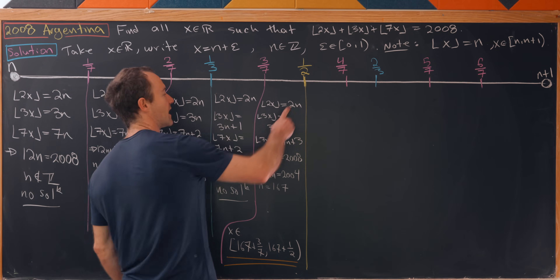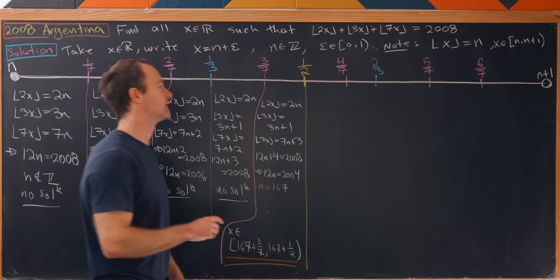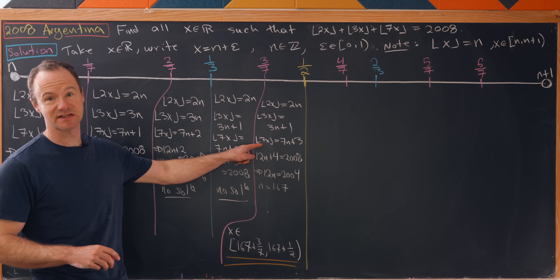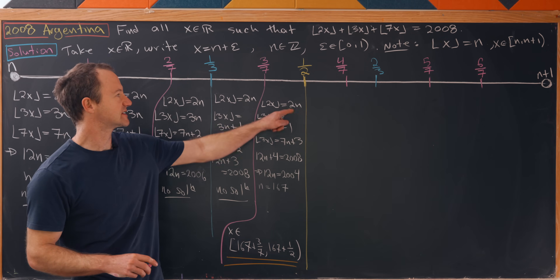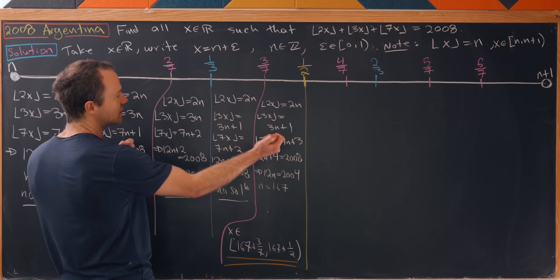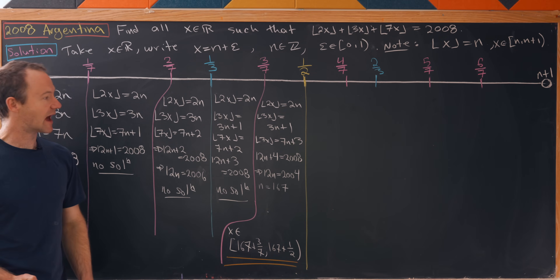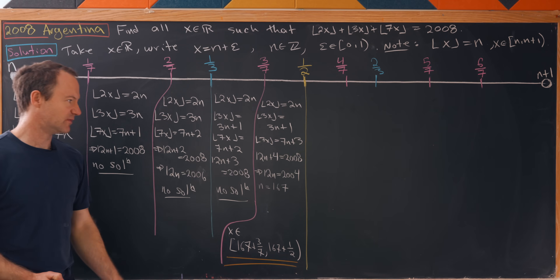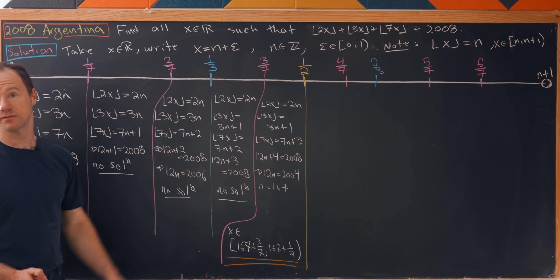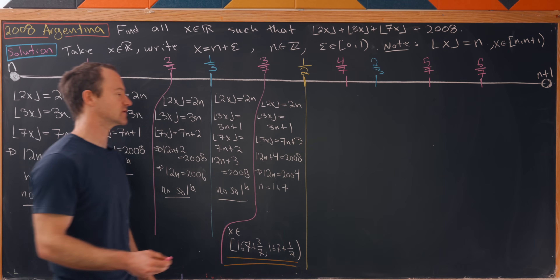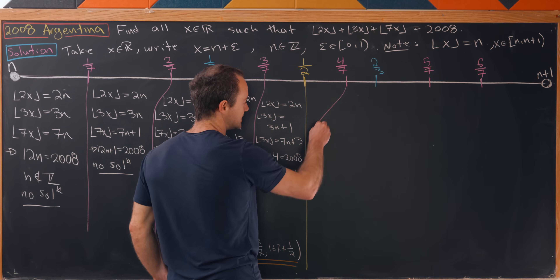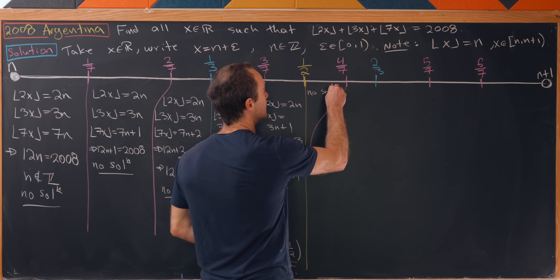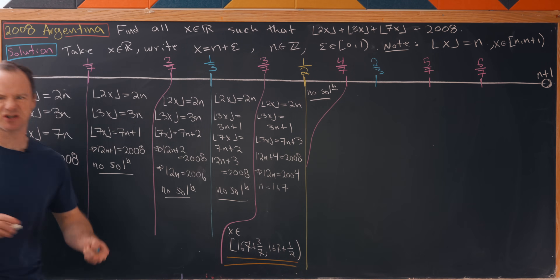Moving to the region between 1/2 and 4/7: this will be exactly the same starting calculation, except floor(2x) = 2n + 1 because we've crossed above 1/2. That means the leftover bits will always be odd, giving an odd number equals an even number — so there is no solution in this region.